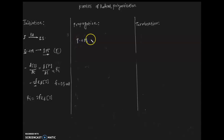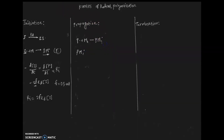In the propagation step, monomers keep adding to the polymer radical, shifting the active center from the polymer radical to the next monomer, forming a new polymer radical center. In general, we can write this as the polymer radical center, showing the chain growth mechanism.